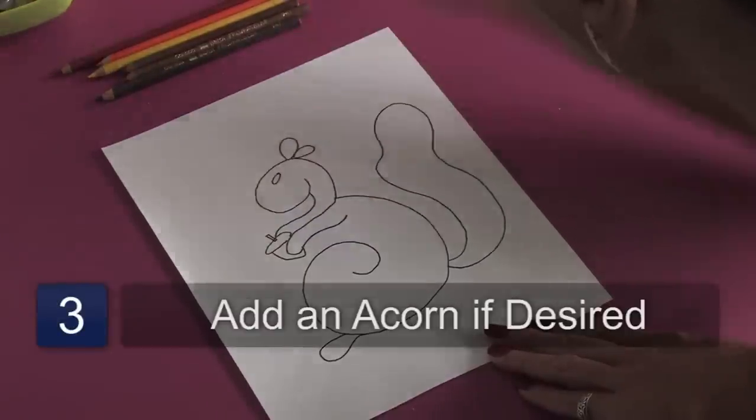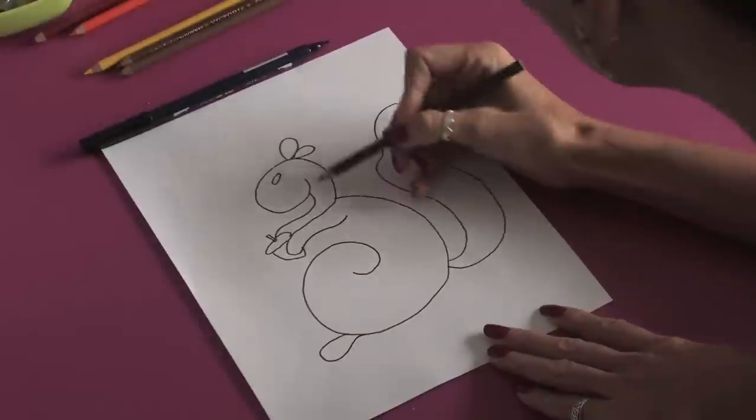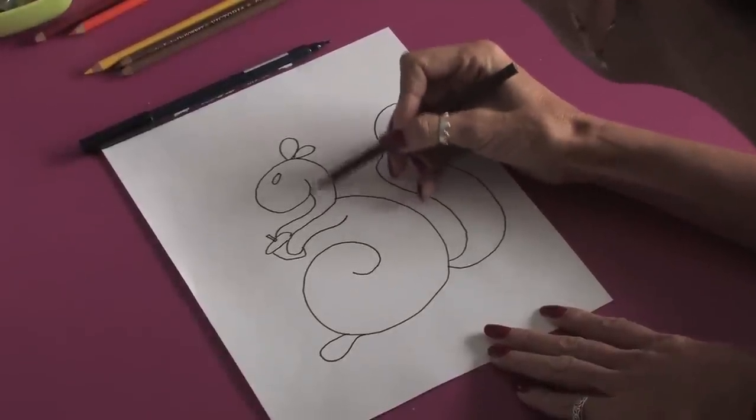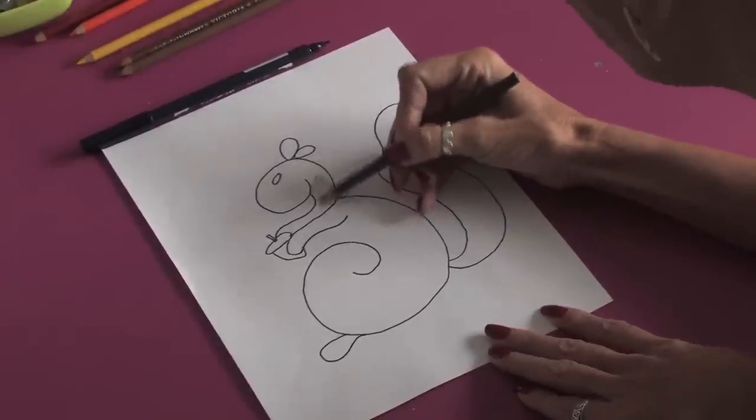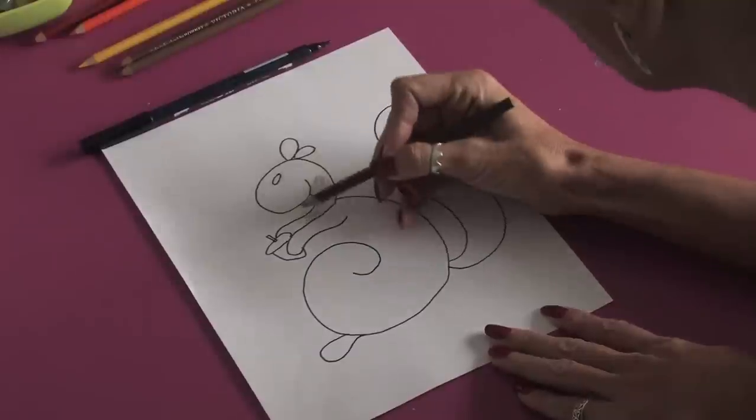Once we get the shape of our squirrel, we're going to take a nice brown colored pencil and start shading him in. You want to have a light touch on the colored pencil and just go back and forth in nice even strokes.